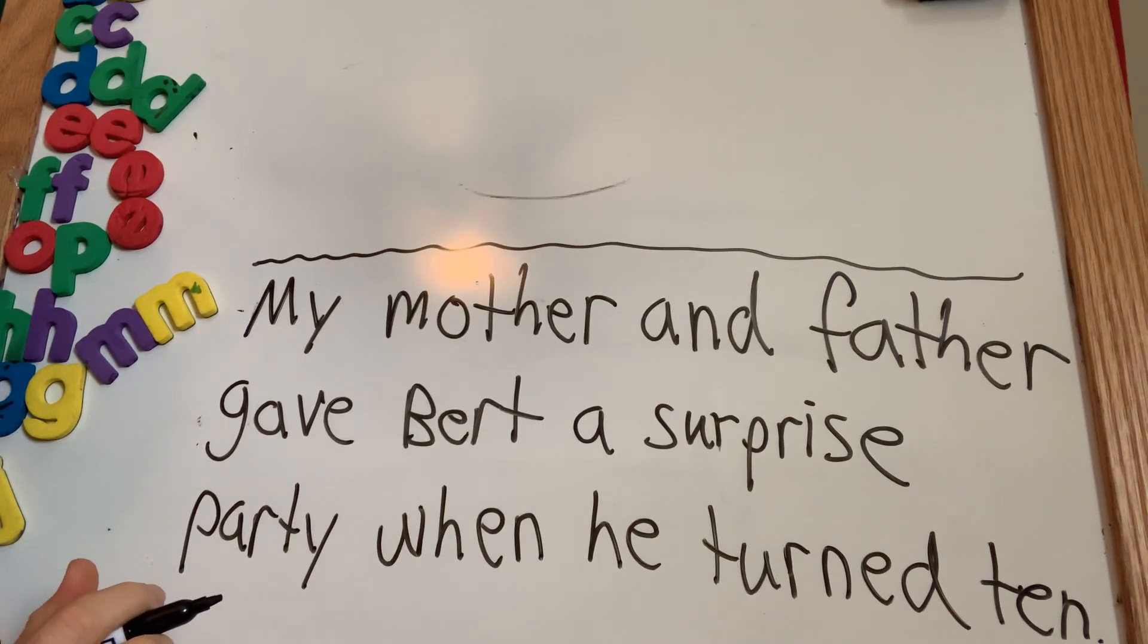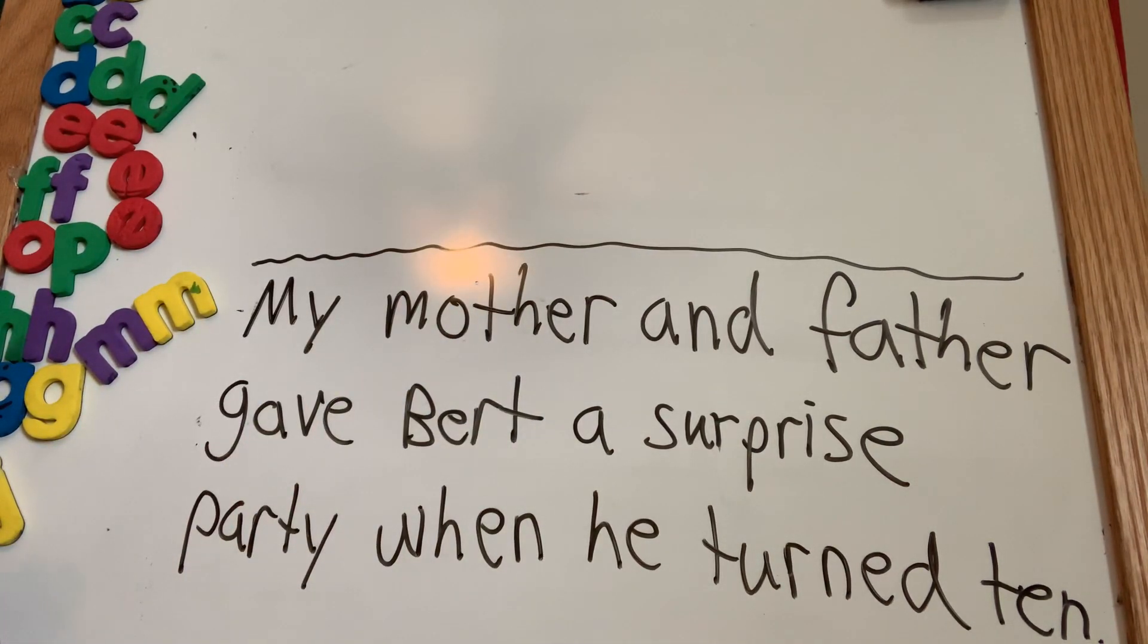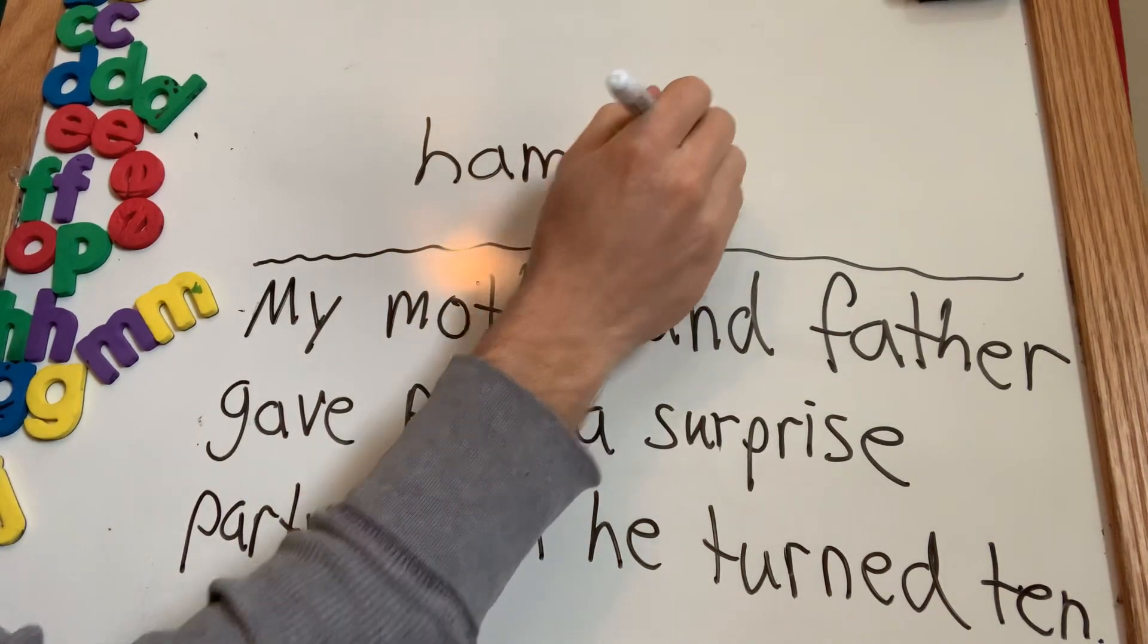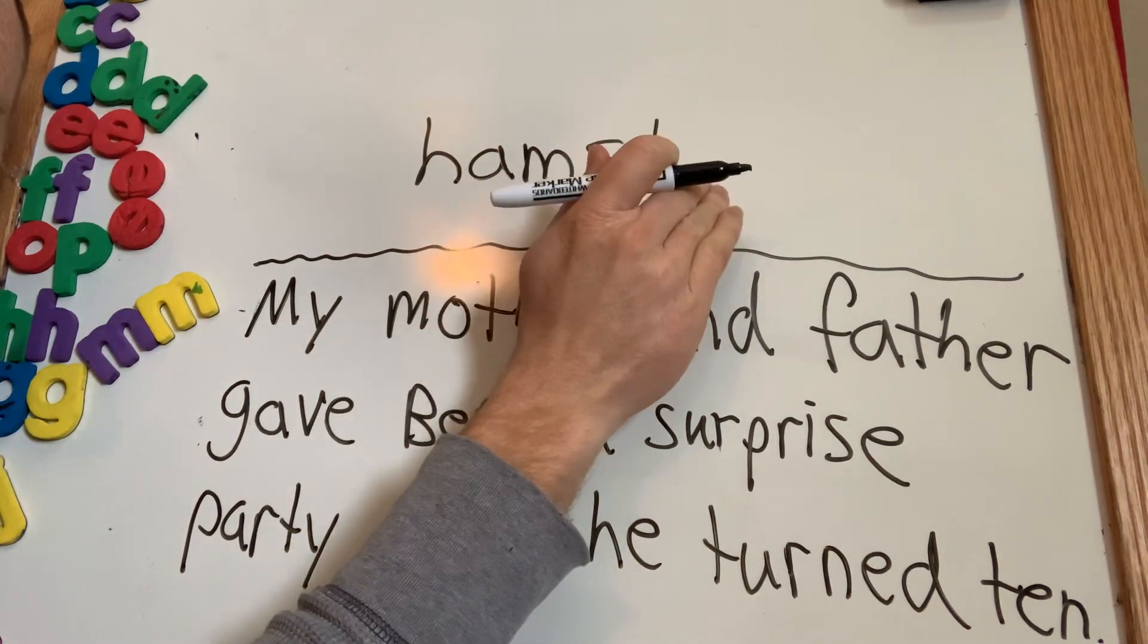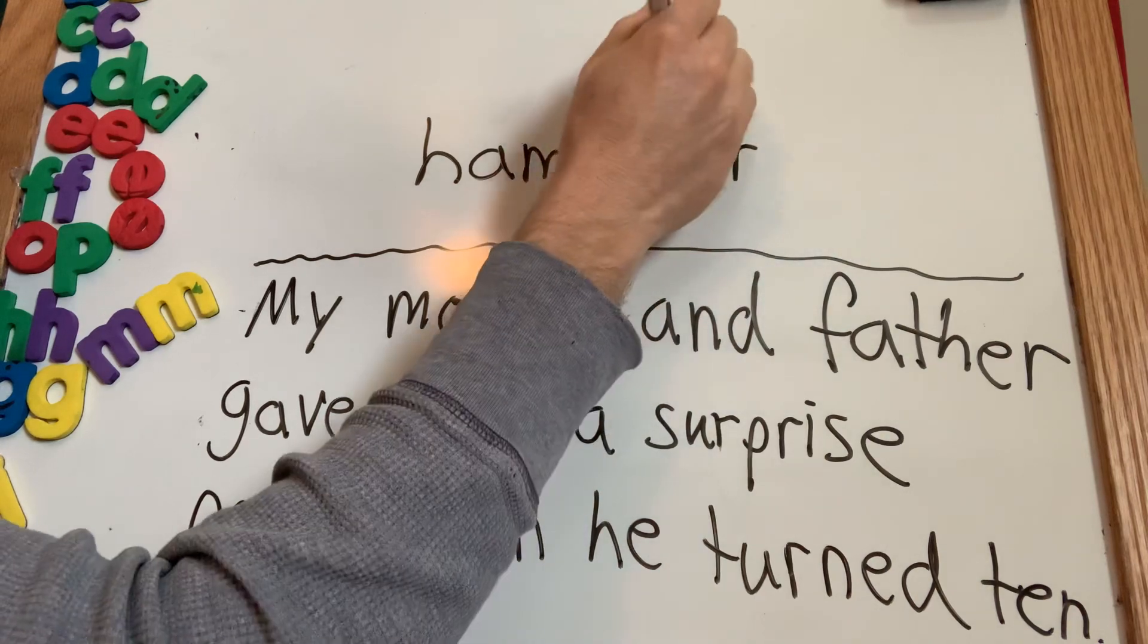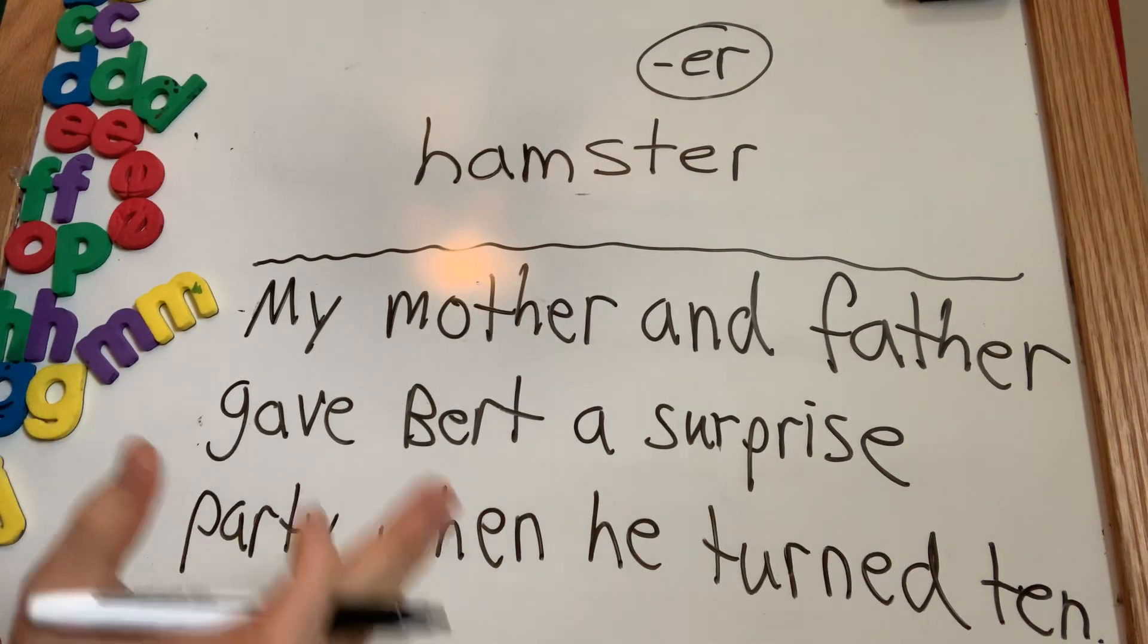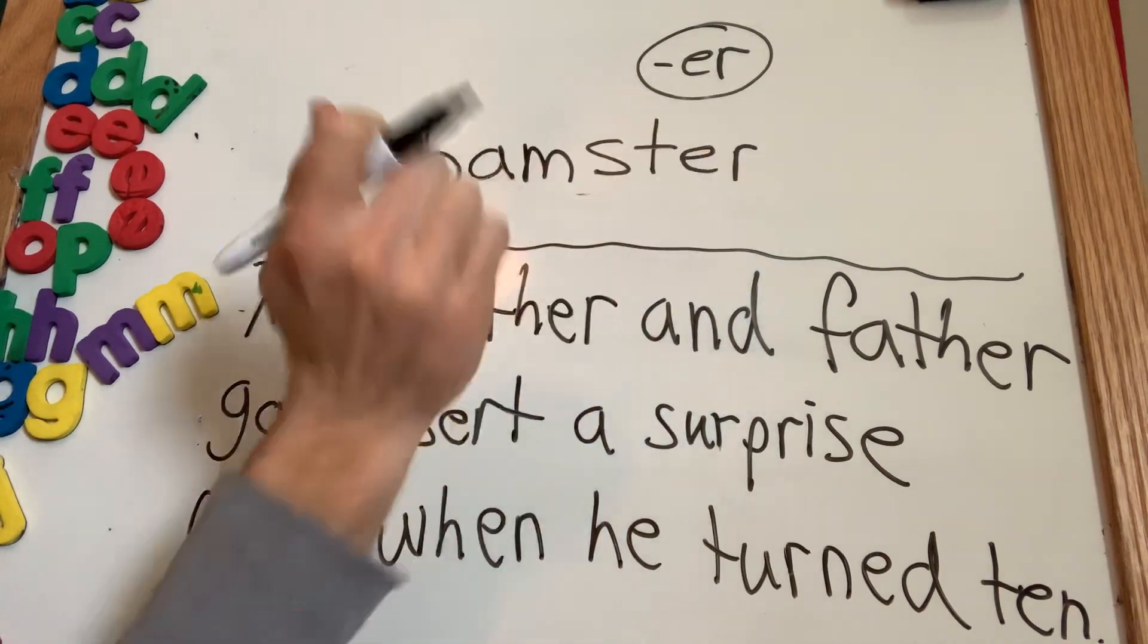Now, let me show you a two-syllable word. Hamster. First, I clap it. Ham-ster. What's the first part? Ham. I just worry about the first syllable. What's the next part? Ster. Now, which one am I going to use? Now, here's the trick. If it's at the end, usually, almost always, it's going to be E-R. E-R almost always comes at the end. That's your trick with knowing if it's E-R.